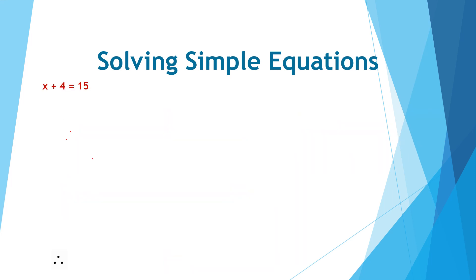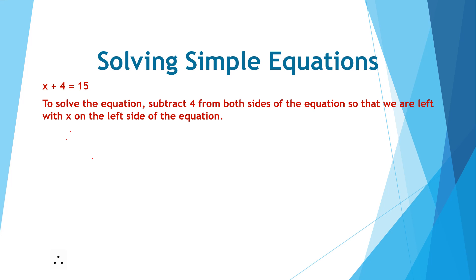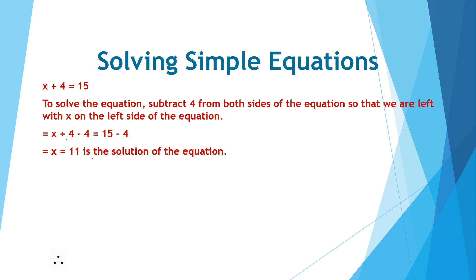The equation is given. To solve it, we subtract 4 from both sides so that on the left hand side we have only x. So x is equal to 11, and this is the solution of the equation. Tara had 11 samosas earlier.